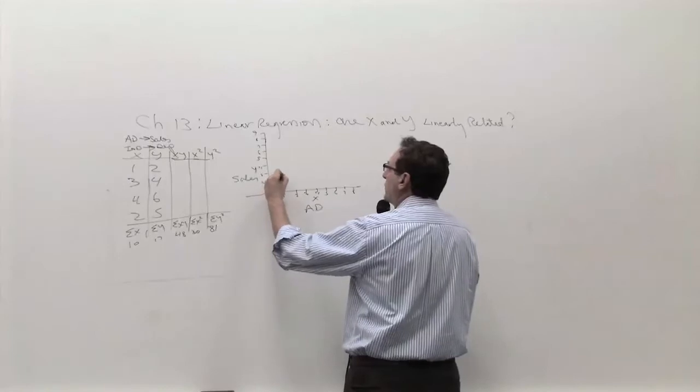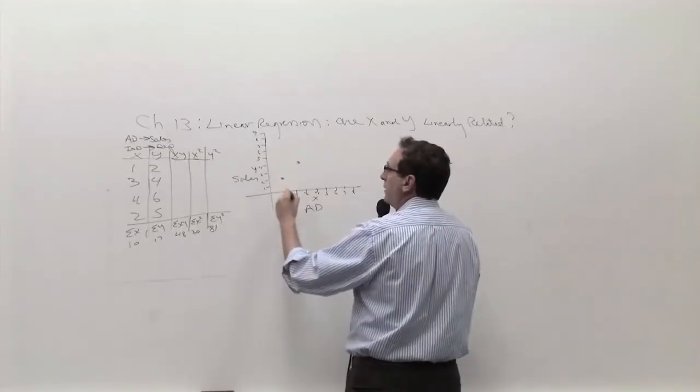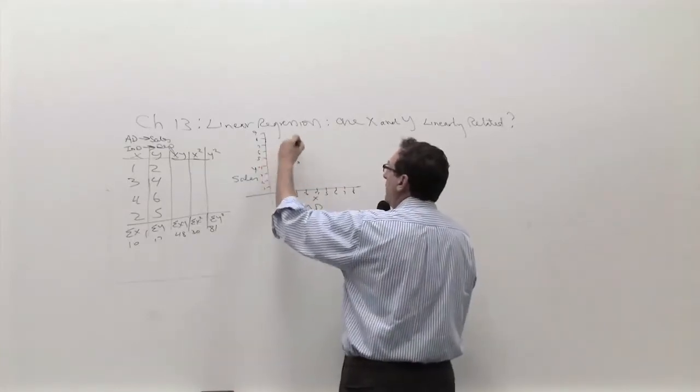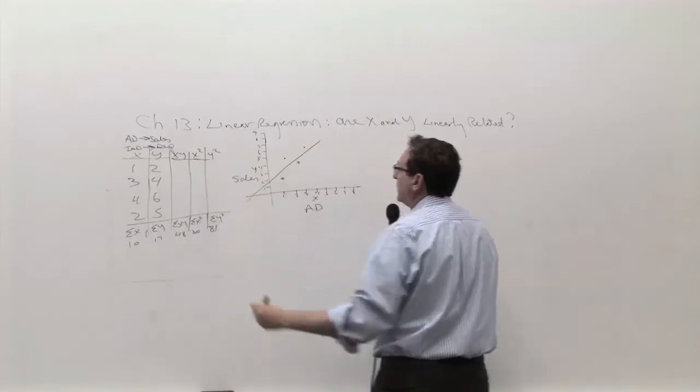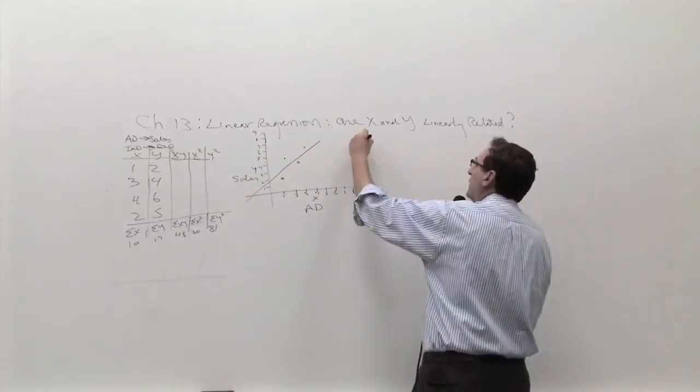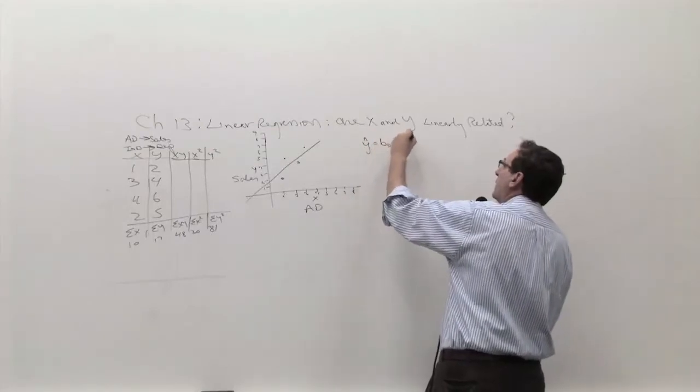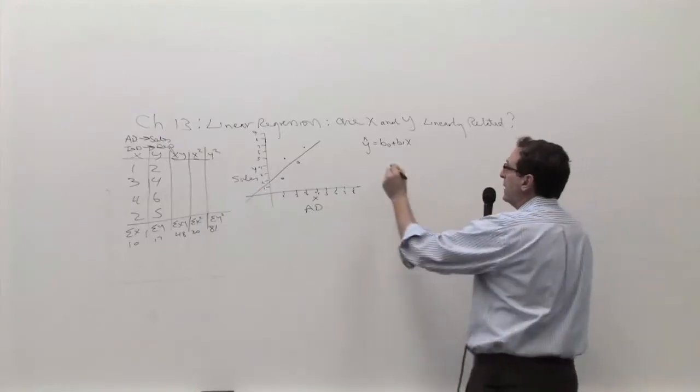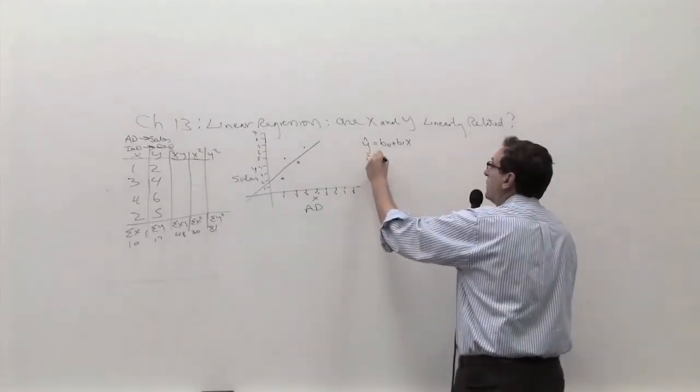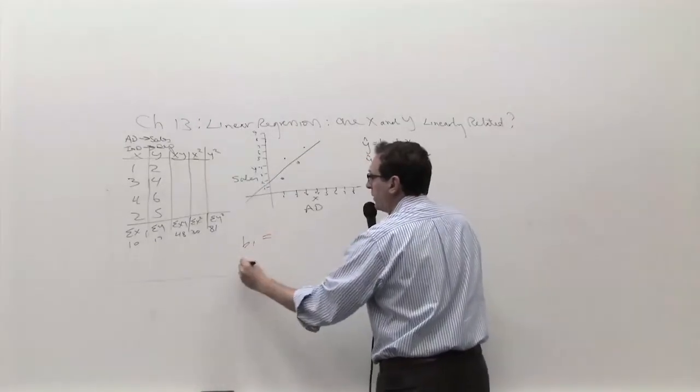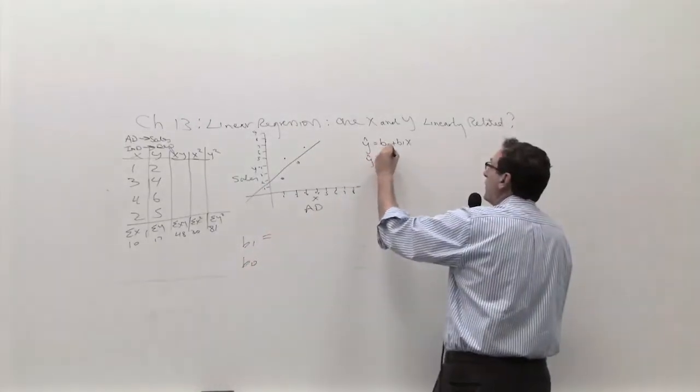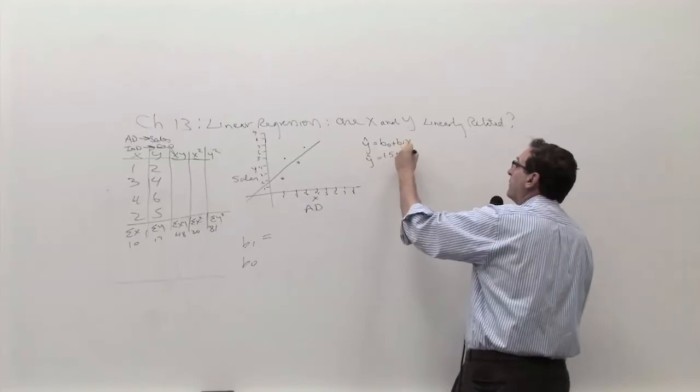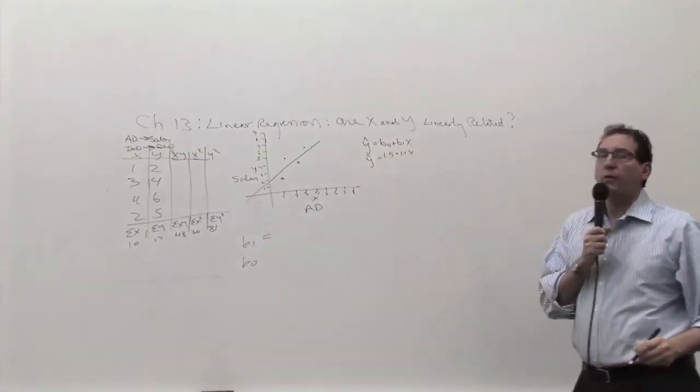The first: 1 on the x, 2 on the y; 3 on the x, 4 on the y; 4 on the x, 6 on the y; and 2 on the x, 5 on the y. We figured a good straight line that fits the data might be something like this. The equation that represents that straight line, which in general is b0 plus b1x, related to the original y equals mx plus b. After doing the calculation, we figured out that the equation was 1.5 plus 1.1x.